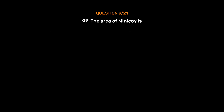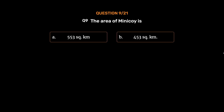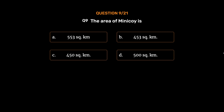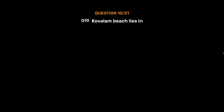Question number 9: The area of Minikoy is — Option A: 553 square kilometers. Option B: 453 square kilometers. Option C: 450 square kilometers. Option D: 500 square kilometers. The correct answer is Option B, 453 square kilometers.